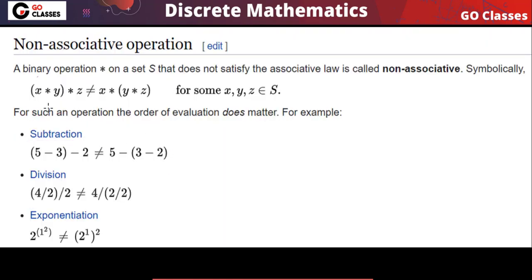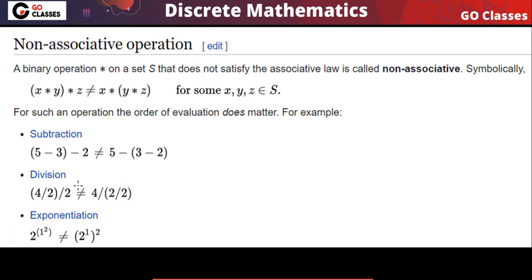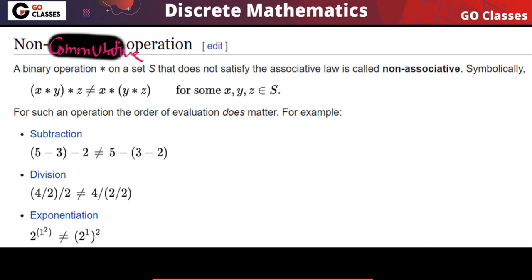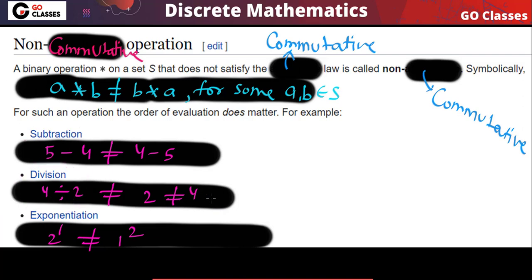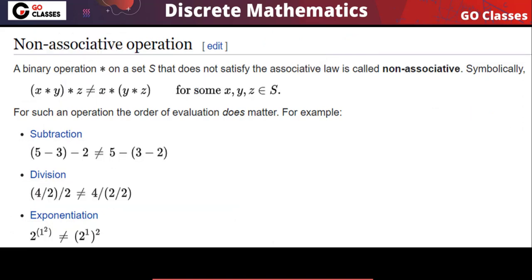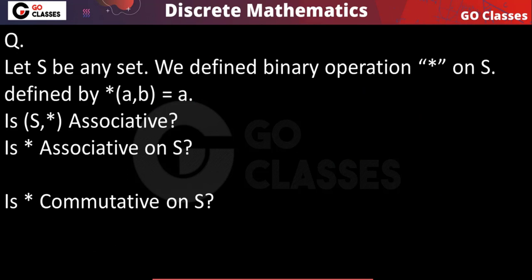Subtraction is not associative — for example, with 5, 3, 2 you can notice the two expressions are not the same. Division is also not associative, and exponentiation is also not associative. These operations are also not commutative: subtraction is not commutative because 5 minus 4 is not the same as 4 minus 5; division is not commutative because 4 divided by 2 is 2 while 2 divided by 4 is 1/2; and exponentiation is also not commutative.